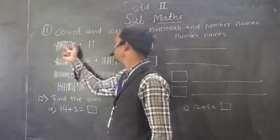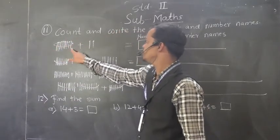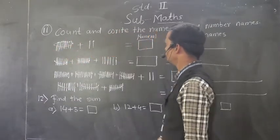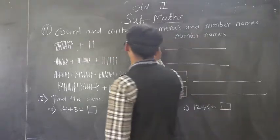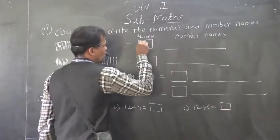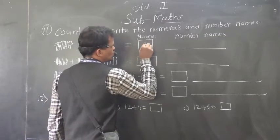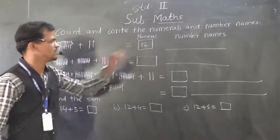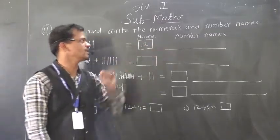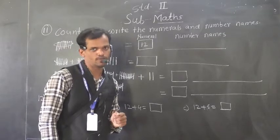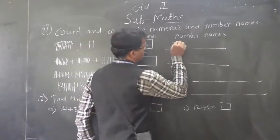So, 10 plus 2 single pencil mean 10 plus 2, 12. We write 12 means 1 tens and 2 ones, 12, number is 4. And here write the spelling of that number 12.